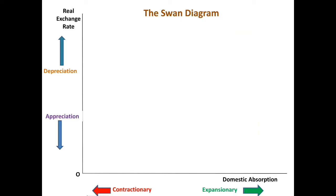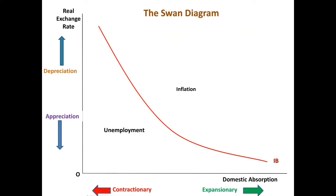The internal balance curve shows the combination of real exchange rate and domestic absorption in which the economy finds itself in internal balance — i.e., full employment along with a stable level of prices. The IB curve is a downward sloping curve from left to right. This is because a fall in the exchange rate — that is, an appreciation — will reduce exports and increase imports. Therefore, to maintain full employment, it is necessary to have an increase in domestic expenditure or absorption. A depreciation should be matched by a decrease in domestic absorption, hence the IB curve is negatively sloped.